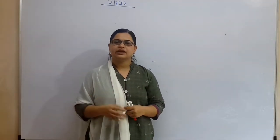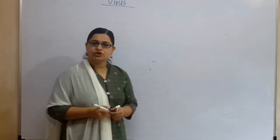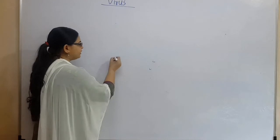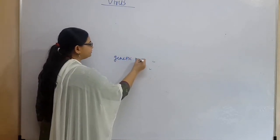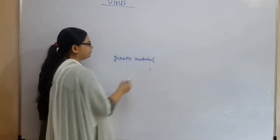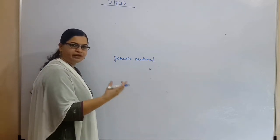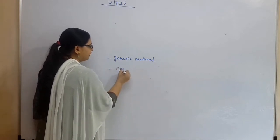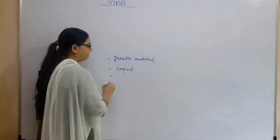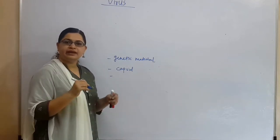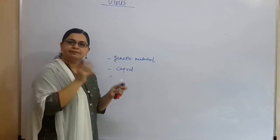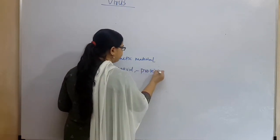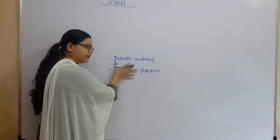Viruses have some characteristics that make them very strong. First of all, they have genetic material. After that, they have a capsid — capsid means it has a covering like a sweater, which is made from protein. So the virus has a protein coat and also genetic material.